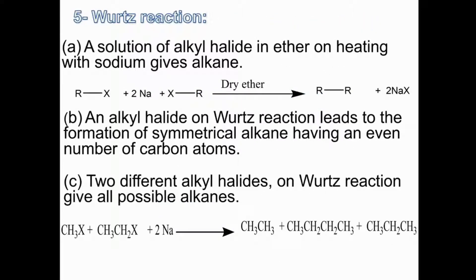Method five is the Wurtz reaction. A solution of alkyl halide in ether on heating with sodium gives alkanes: RX + 2Na + XR (dry ether) → R-R + 2NaX. An alkyl halide on Wurtz reaction leads to the formation of a symmetrical alkane having an even number of carbon atoms. Two different alkyl halides on Wurtz reaction give all possible alkanes. So the Wurtz reaction can be used to prepare symmetrical alkanes from two similar alkyl halides such as methyl chloride, ethyl chloride, propyl bromide, or butyl bromide.